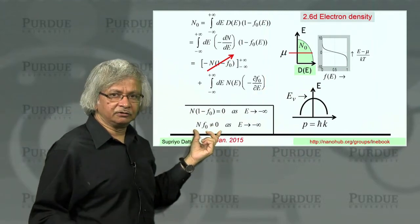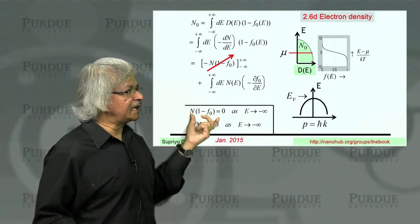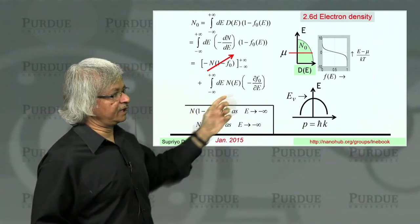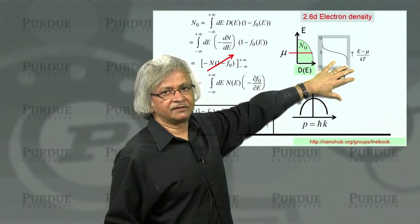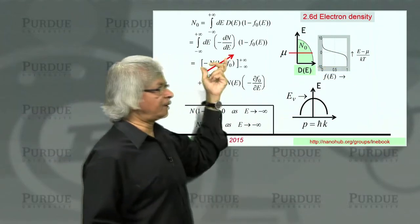But N times 1 minus F0 is, because down here F0 is almost 1, so 1 minus F0 is zero. So I can drop that term.